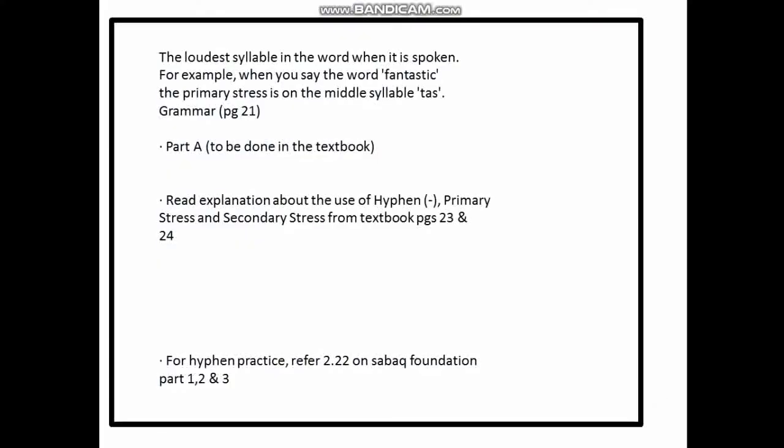The primary stress falls on the loudest syllable in the word when it is spoken. For example, in the word 'fantastic,' the primary stress falls on the middle syllable 'tas.' The word 'fantastic' is produced with three syllables and three single chest pulses, and the primary stress occurs on 'tas.' Your Part A should be done in the textbook; read the explanation about hyphen on pages 23 and 24.